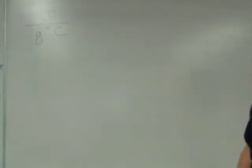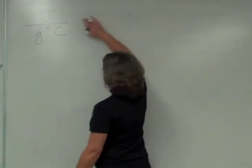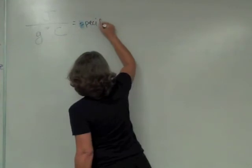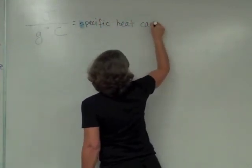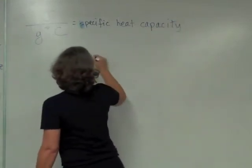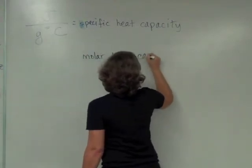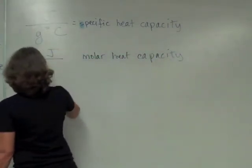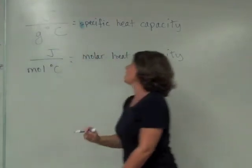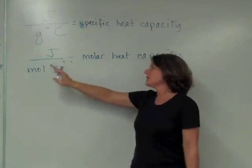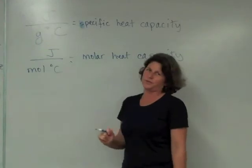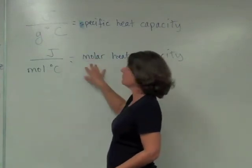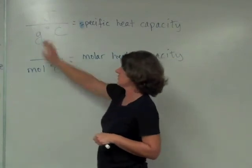We also have something called the molar heat capacity. And how do you think that unit is different? That's going to be joules per mole degree Celsius - so how much energy does it take to change the temperature of one mole of the material by one degree Celsius. To go from specific heat capacity to molar heat capacity, they're just going to multiply it by the molar mass, right, changing grams.